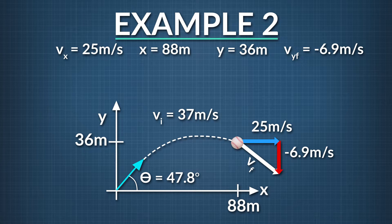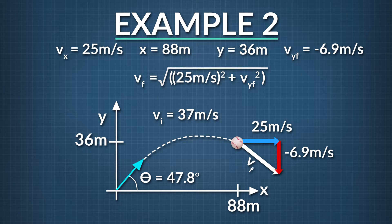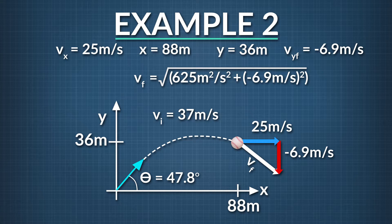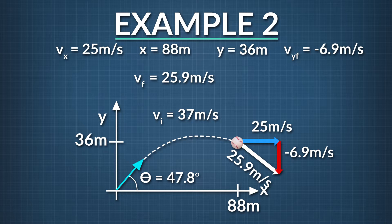Now we use these two values as legs of our triangle and use the Pythagorean theorem to solve for the resultant final velocity. Final velocity equals the square root of the final velocity in the x-direction squared plus the final velocity in the y-direction squared. Plugging in our values, we see the final velocity equals the square root of 25 meters per second squared, which is 625 meters squared per second squared, plus negative 6.9 meters per second squared, which is 47.6 meters squared per second squared. After we add these together, the final velocity equals the square root of 672.6 meters squared per second squared. When we take the square root, our final answer is 25.9 meters per second.